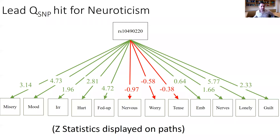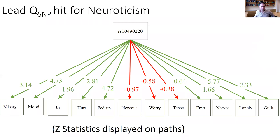The Manhattan plot for neuroticism showed 118 approximately independent lead SNPs. Thirty-eight were not genome-wide significant in the univariate summary statistics going into the analysis. Sixty were previously significant in the univariate statistics but not for the general neuroticism dimension, suggesting they may operate through more specialized pathways. We found 69 significant Q SNP estimates — SNPs with uneven effects across neuroticism items. An example Q SNP shows near-zero associations with items 'nervous,' 'worry,' and 'tense,' but very positive associations with remaining neuroticism items, suggesting it operates through a more specialized pathway rather than conferring general neuroticism risk.